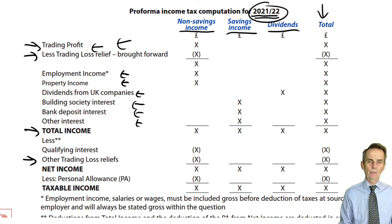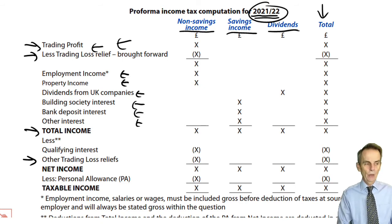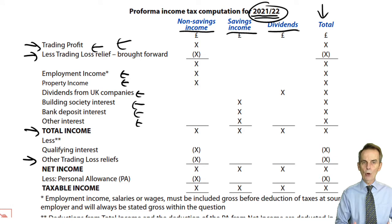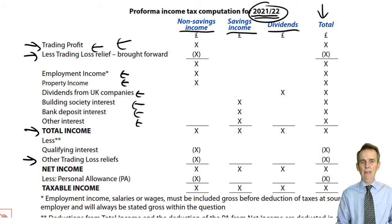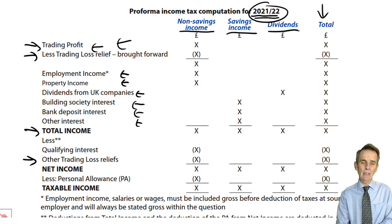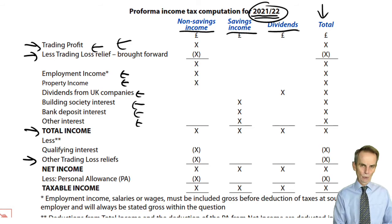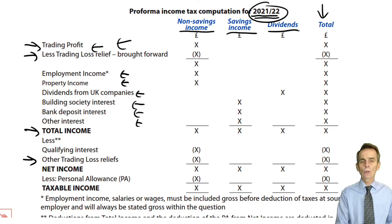Why must we keep those separate? Because there are differing tax rates. Income tax is a progressive tax, meaning that as income gets steadily bigger we may move from a lower into a higher rate of taxation. What also impacts the rate of tax is the type of income: dividend income has different tax rates compared to non-savings and savings income. For savings income there are special rules — a zero percent starting rate, and separately a nil rate band.